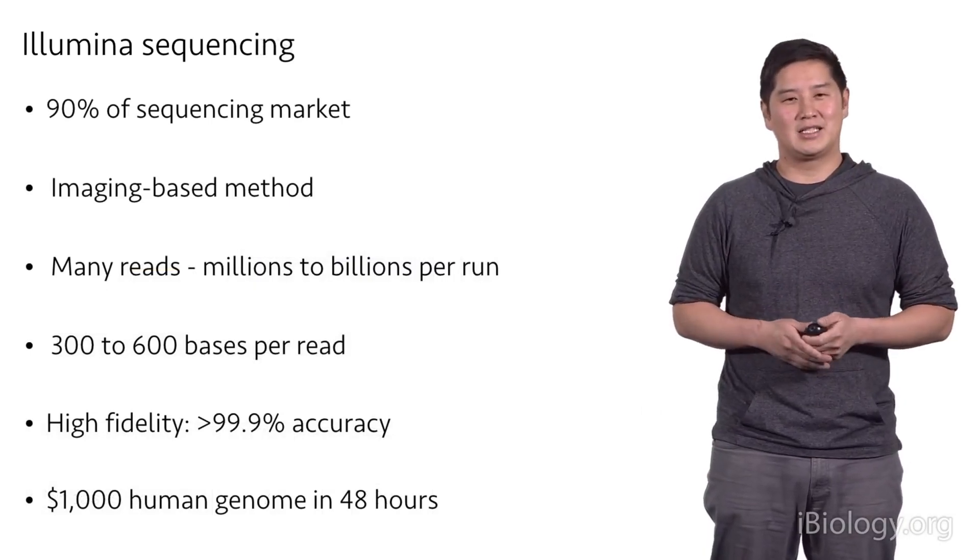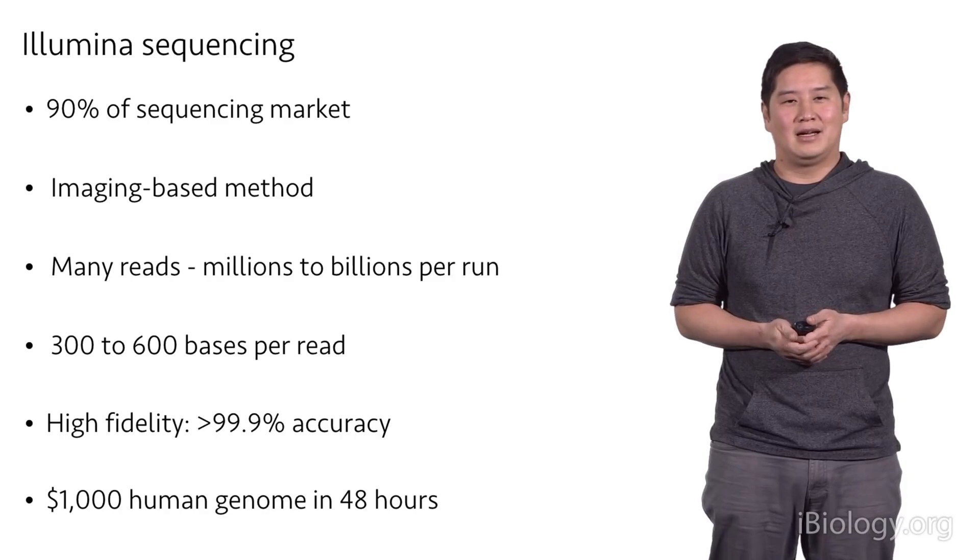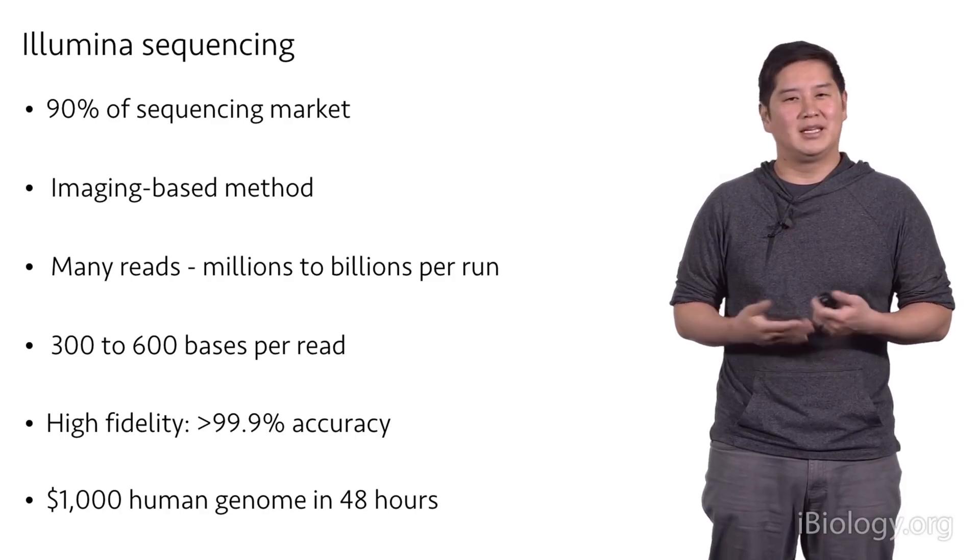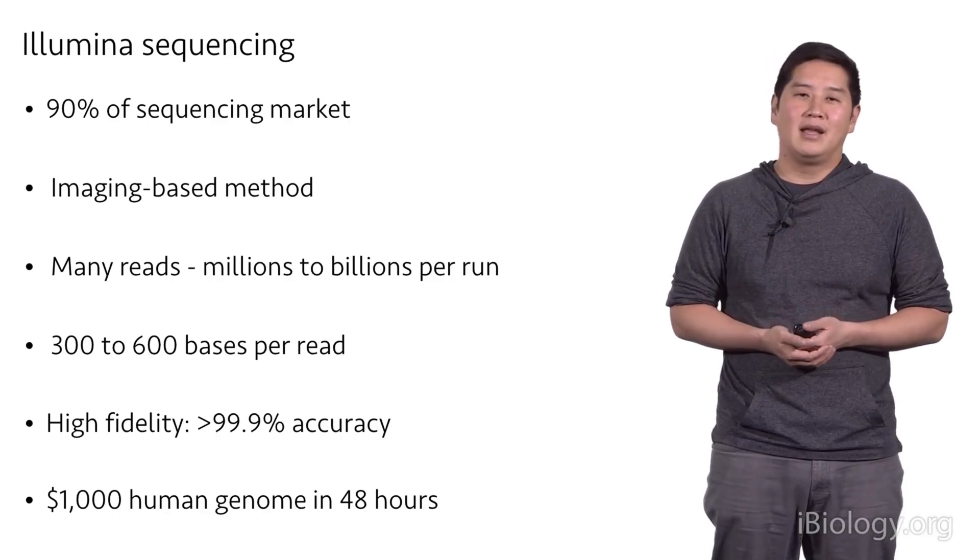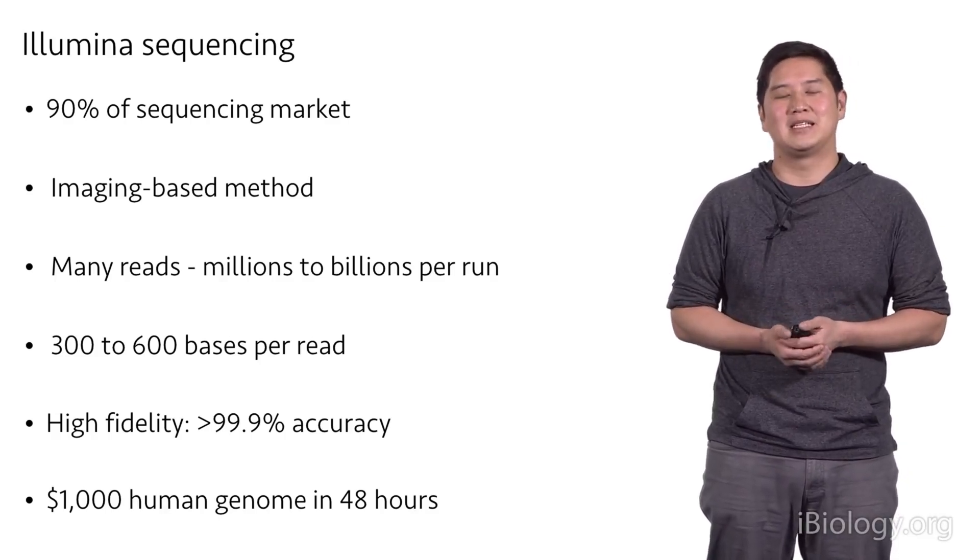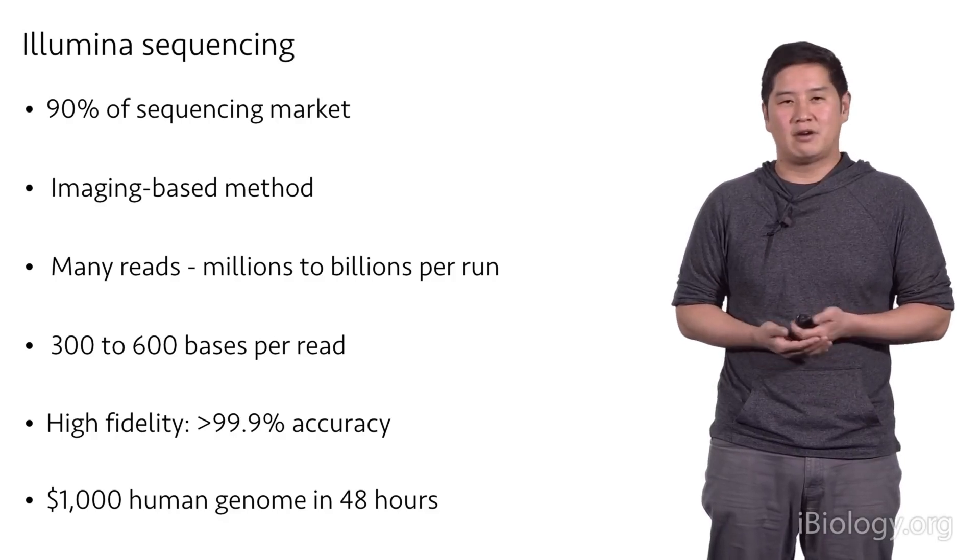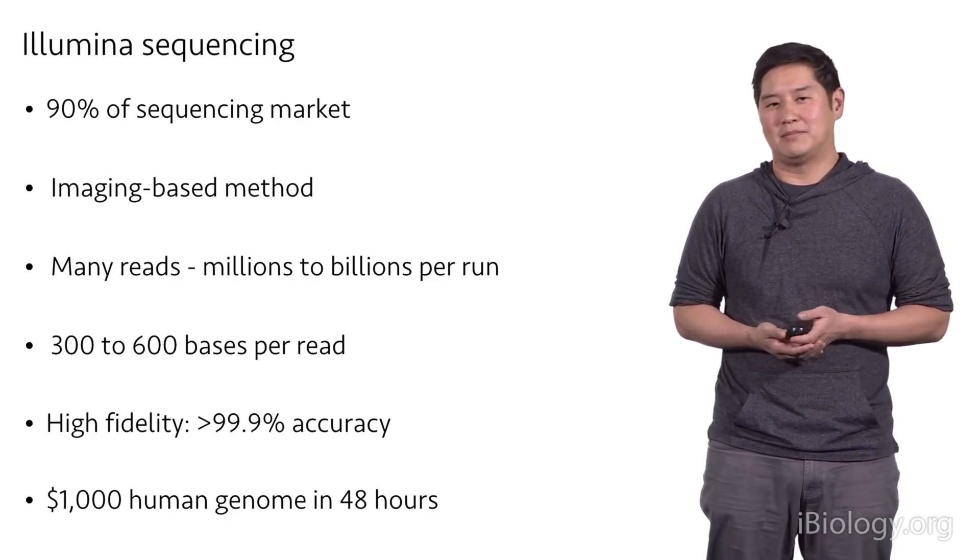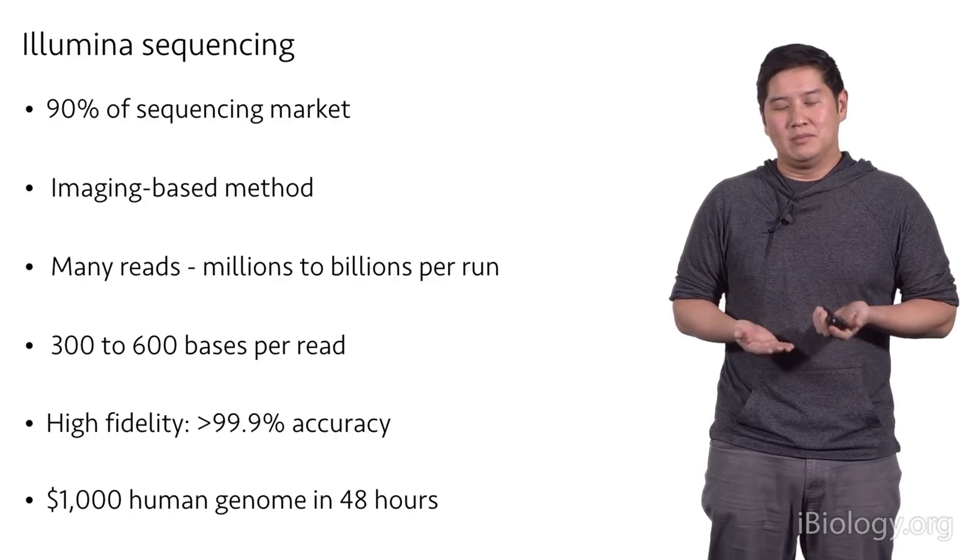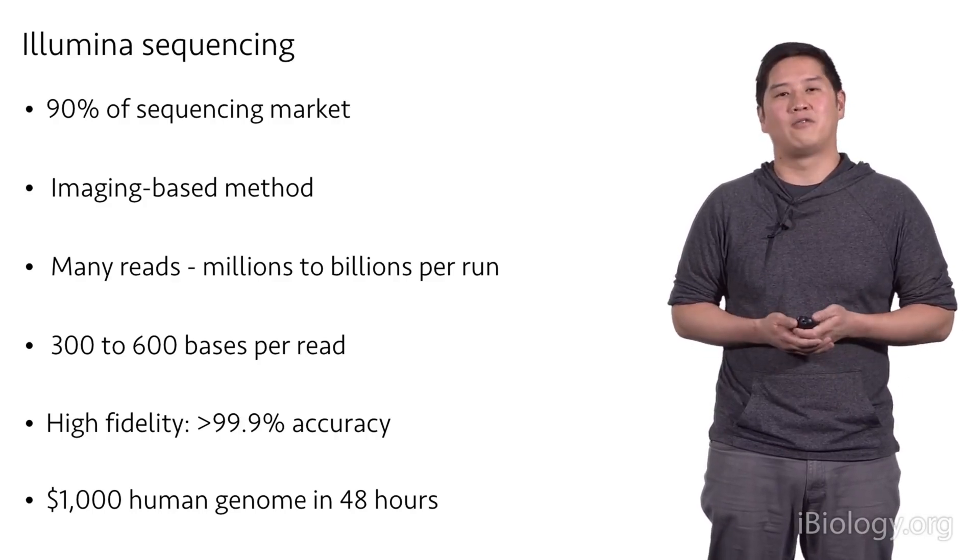Illumina sequencing is the dominant player in the market. It's an imaging-based method and generates many, many reads, millions to billions of reads per run. And from each of these reads, we can generate 300 to 600 bases of sequence. It's really, really accurate. The error rate is roughly one in the 1,000 bases. And with the new machines, we can actually sequence a human genome for $1,000 in less than 48 hours.